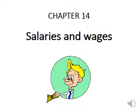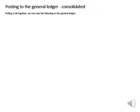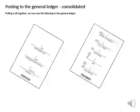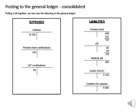Today we're going to look at an example of posting from the salary journal to the general ledger. Putting it all together, we now see the following in the general ledger: expenses — salaries, pension fund contributions, UIF contributions, and any other contributions of the expenses.